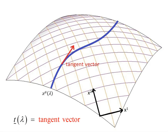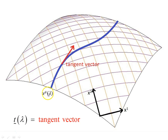Here's some manifold with a curve on it marked in blue, parameterised in terms of the variable lambda. For each component, we have x mu of lambda, where mu in general relativity goes from 0, 1, 2, 3 — four components for a four-vector in spacetime. The tangent vector, shown in red, is the tangent to this curve, and the derivative of the coordinates with respect to the parameter lambda gives us the tangent vector components.